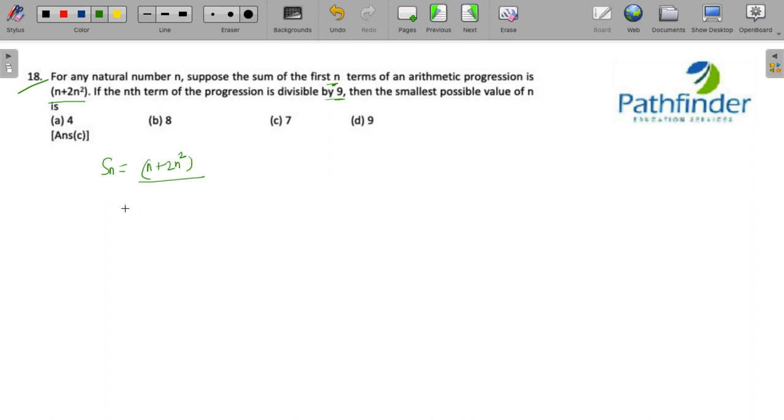Now if I want to find out the nth term, this must be equal to sum to n terms minus sum to n minus 1 terms. What is sum to n terms? n plus 2n squared.